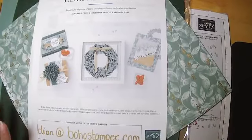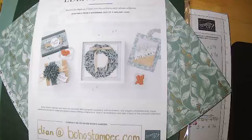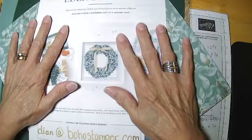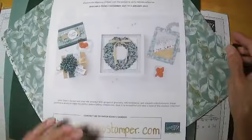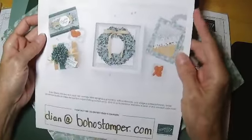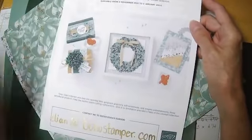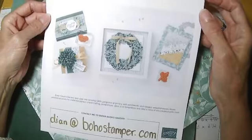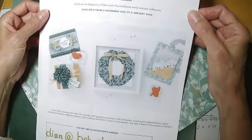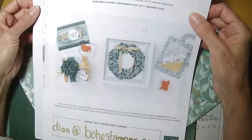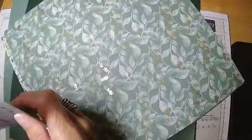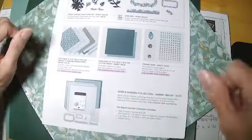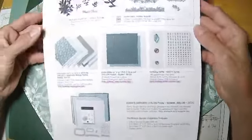Before we get started, I don't know if you also tune in to my YouTube channel on Fridays. I had shared the Eden's Garden Suite. My products had just arrived, and so I wanted to share with everybody what they look like. This product suite will become available to you, the customers, on November the 2nd. The Stamp and Die set will be included in the January to June mini catalog that comes out at the beginning of the year. But some of these other products are only available while supplies last.